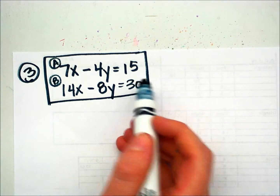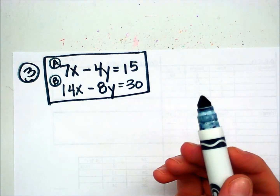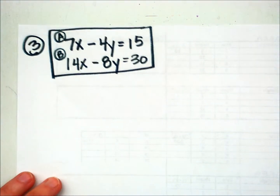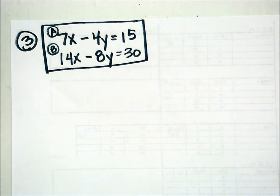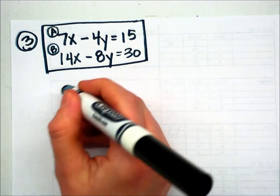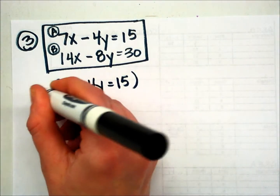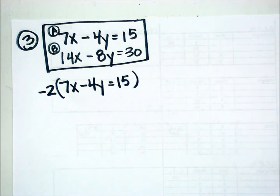For this one, we have two equations, both in standard form. We need to rewrite these using elimination to solve. Looking at equation A, the coefficient of x is a positive 7. In equation B, the coefficient of x is a positive 14. I immediately notice that if I multiply equation A by negative 2, the coefficient of x will end up being negative 14, and then I would be able to cancel out the x's. So that's how I'm going to begin.